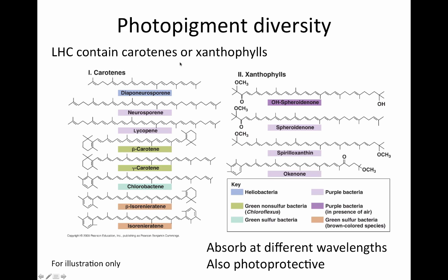Photopigments of carotenes and xanthophylls are also found in reaction centers. These are long molecules with many double bonds. Here are examples of different carotenes and xanthophylls, which are found in photosynthetic organisms. They absorb light at different wavelengths, and most importantly, they are photoprotective for the photosynthetic apparatus.